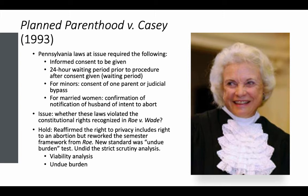The issue was whether these laws violated the constitutional rights recognized in Roe v. Wade. The court reaffirmed the right to an abortion that exists in Roe v. Wade; however, they changed the analysis. Instead of using strict scrutiny, they would use this undue burden test. No longer did strict scrutiny apply — instead, they had a viability analysis instead of the trimester framework, along with this undue burden test.